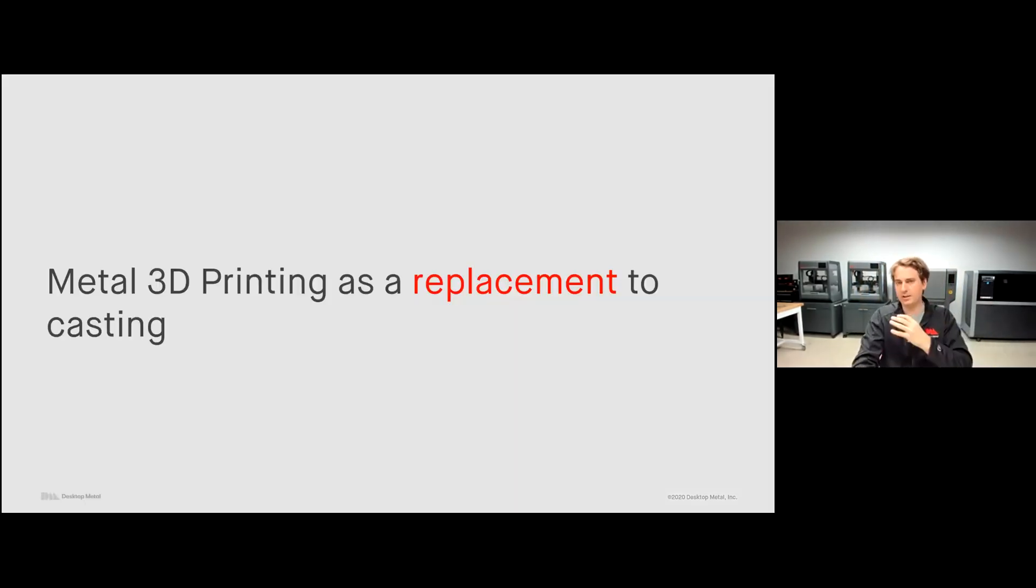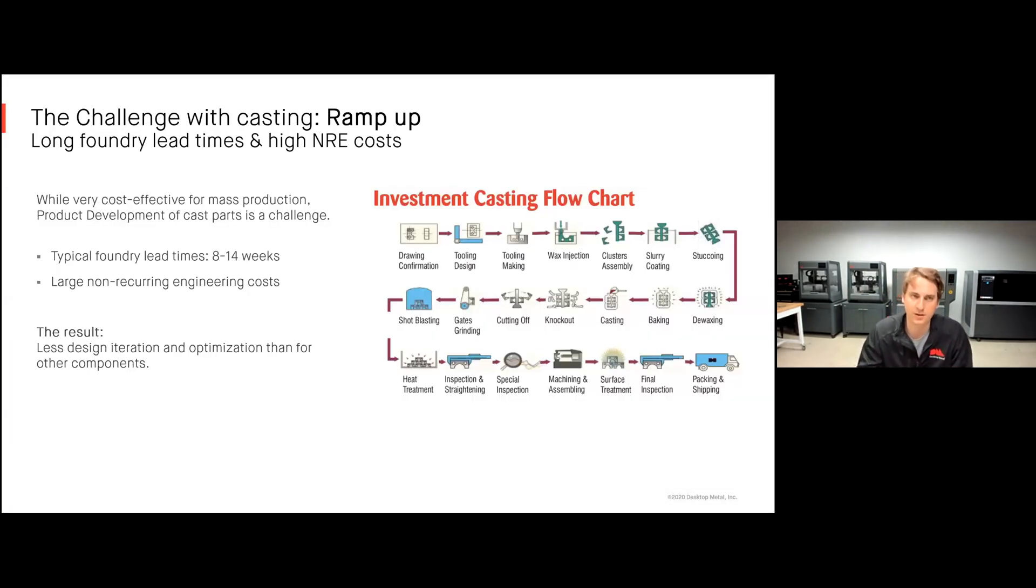Now we're going to switch over, talk about metal 3D printing as a replacement to casting. Hopefully you've seen a few examples there of where metal 3D printing can assist with your casting. We're talking about prototyping and replacement parts more on the low volume end, but what about metal 3D printing actually to replace parts that you're going to be casting in high volumes? We already briefly talked about this earlier, but one of the main challenges with casting is the ramp up. You have these extremely long foundry lead times and these extremely high NRE costs, making it really only cost effective for these very high volumes. But even when you're at those high volumes, you still have these very long lead times and high costs and NRE costs associated with the process.